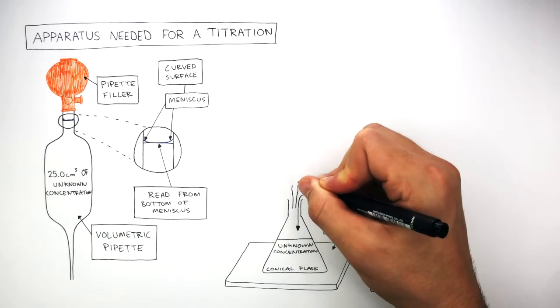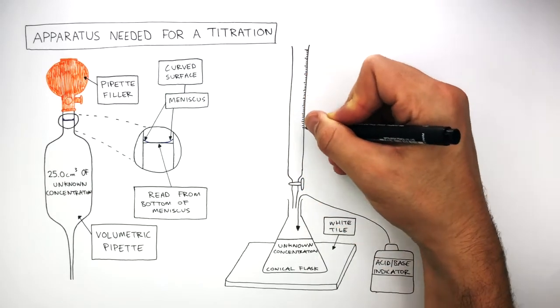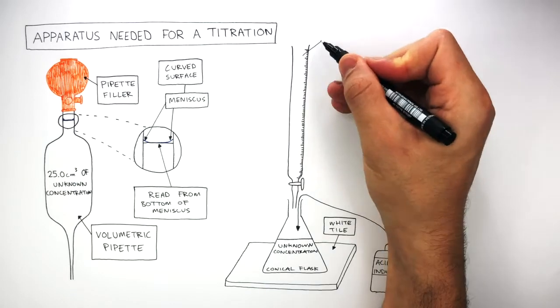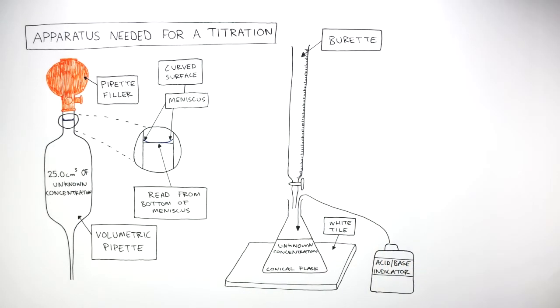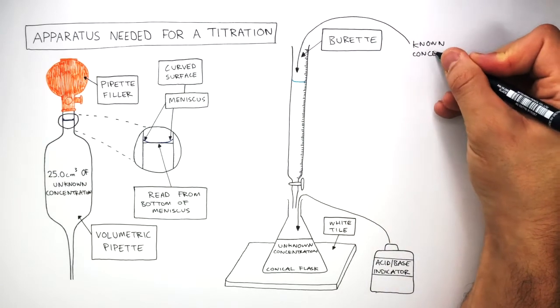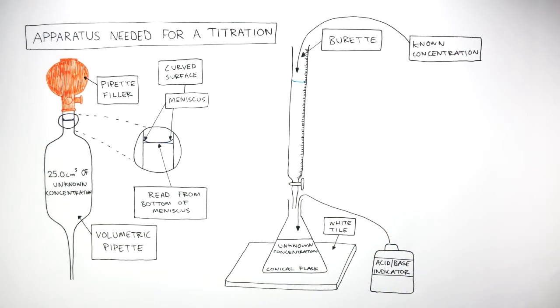A burette which has a tap and gradation going up the sides is then placed on top of the conical flask. This is the burette and the burette contains the known concentration. The known concentration of acid goes into the burette.